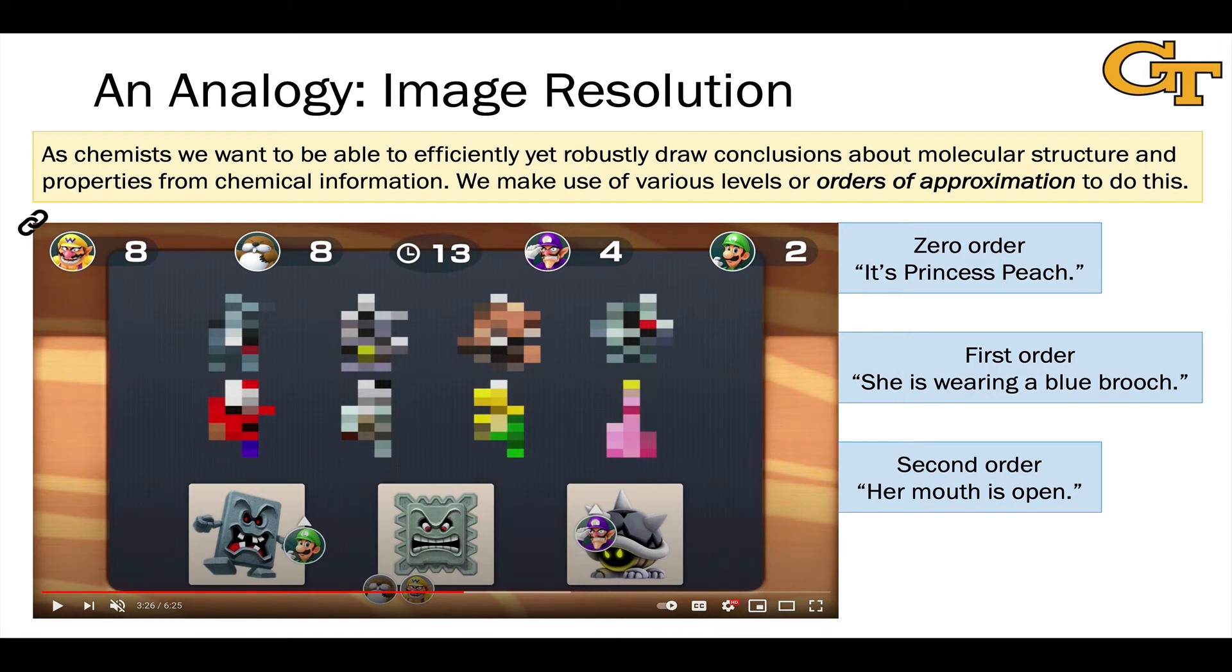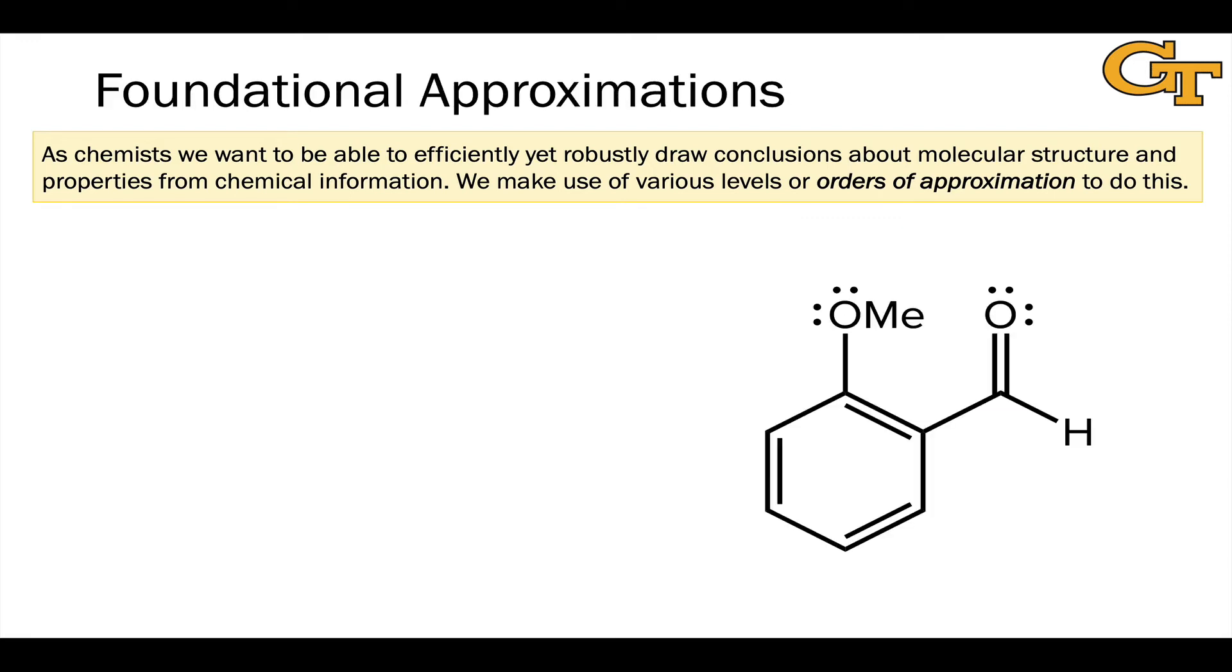The idea of orders of approximation in photochemistry is particularly important. We're going to spend a lot of time living on the zero order level, but it's important to keep in mind that this level is based on approximations. We can remove the restrictions associated with those approximations to obtain a more accurate or precise picture of what's going on with a molecule, an excited state for example, in a photochemical situation.